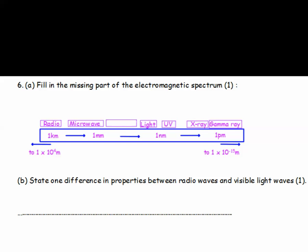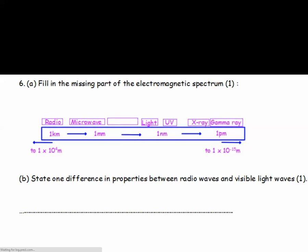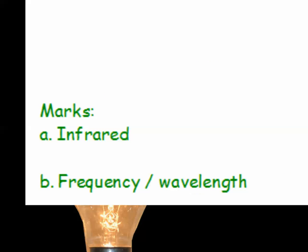Question 6. Fill in the missing part of the electromagnetic spectrum. And part B. State one difference in properties between radio waves and visible light waves. And the answers, the missing part is infrared. And the difference between radio waves and visible light waves is they will have a different frequency or a different wavelength.